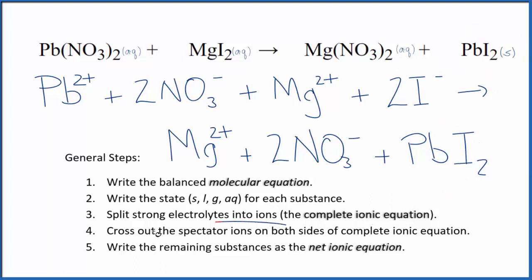Now we can cross out spectator ions. They're on both sides of the complete ionic equation. So in the reactants, we have 2 nitrate ions. Here in the products, we also have 2 nitrate ions. These are spectator ions. We're going to cross those out.